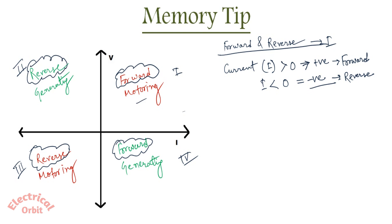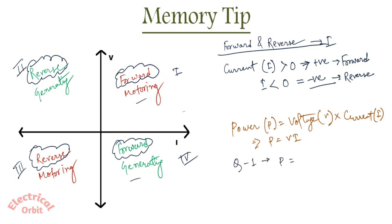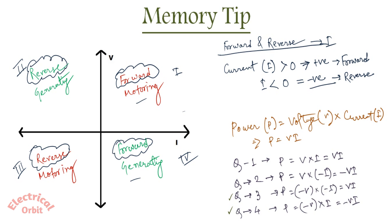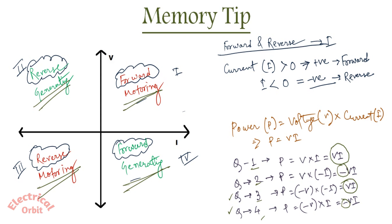Next, for motoring versus generating — we know power equals voltage multiplied by current. For quadrant 1 your power is positive: plus V times I. For quadrant 2 voltage is positive but current is reversed, so it is minus V times I. Similarly for quadrant 3 and 4. Whenever V times I is positive — quadrant 1 and quadrant 3 — it's motoring; whenever your power is negative — quadrant 2 and quadrant 4 — it is generating.